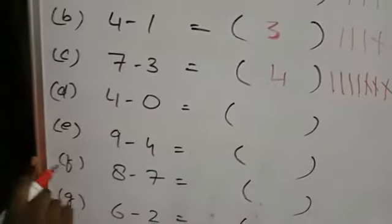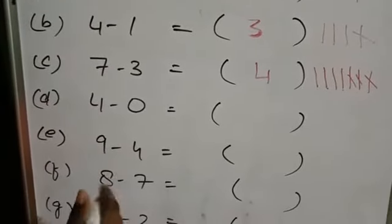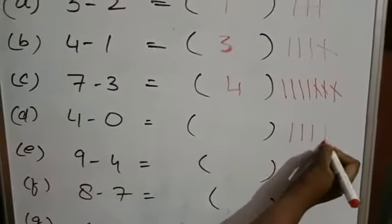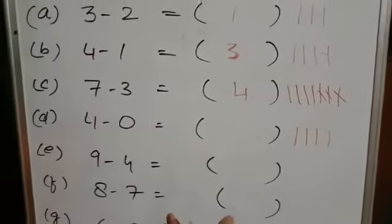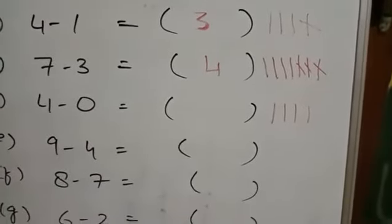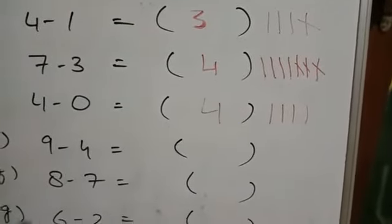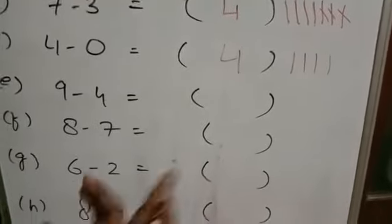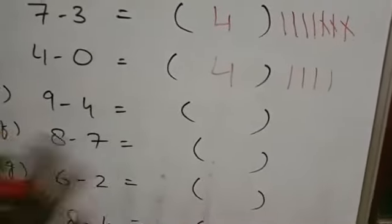Next, D: 4 minus 0. You have to draw 4 lines, and how many do you have to minus? 0. That means you don't have to cut any lines. So here we are getting 4 only. 0 means 0, so we are not cutting any lines.